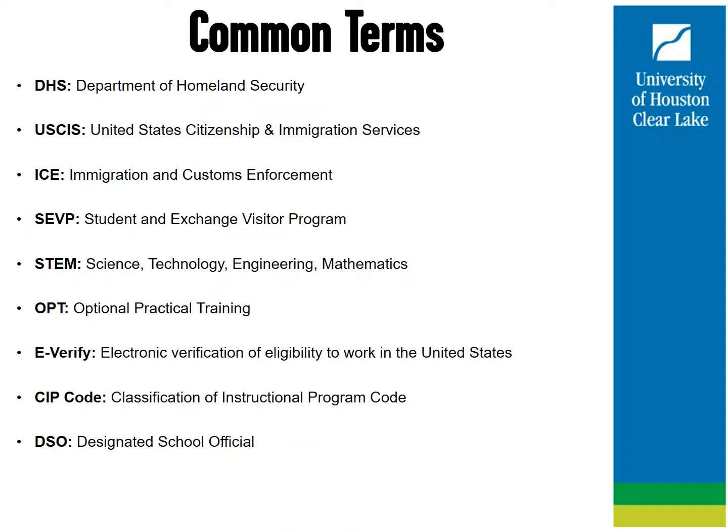Please take a moment to review these common terms we will be mentioning throughout the presentation. DHS is the Department of Homeland Security, which oversees all government agencies related to international students and the security of the United States. USCIS approves and/or denies all STEM OPT applications. ICE can make site visits to your employer to ensure compliance with the STEM program. SEVP is the Student and Exchange Visitor Program, of which SEVIS is the reporting function — this is where we report information about students, such as your employment information and physical living address.